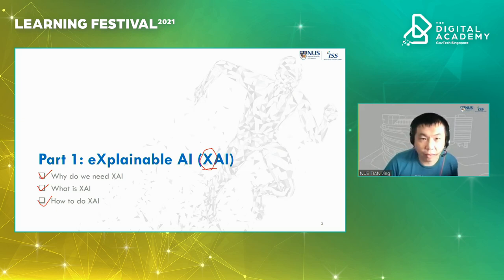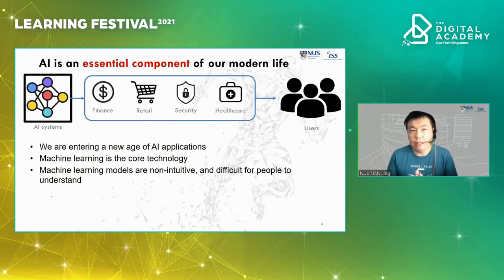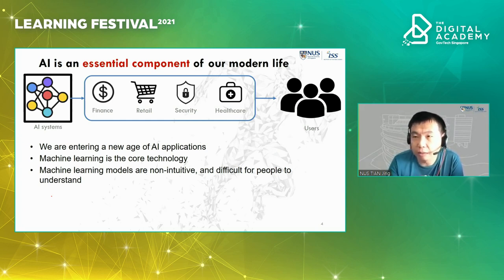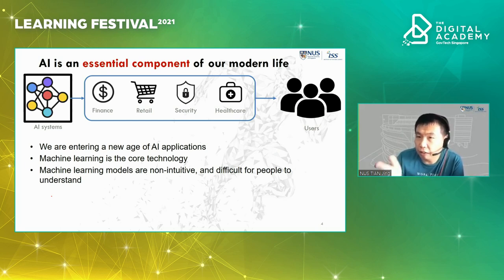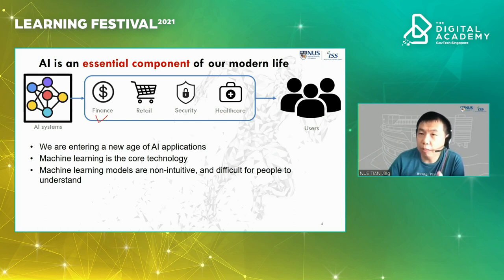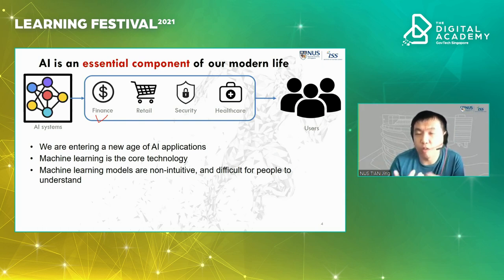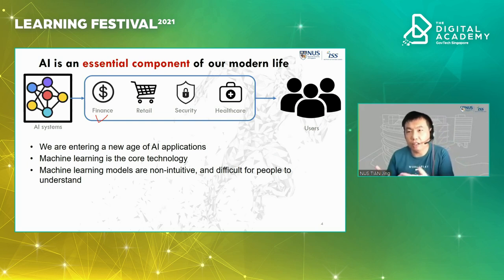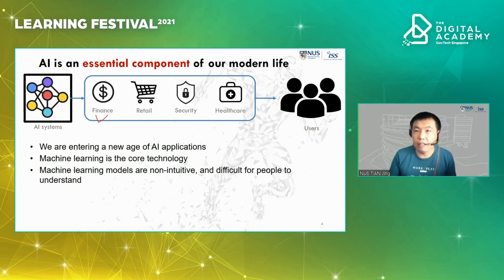Artificial intelligence is an essential component in our modern lives. We already see many successful AI applications across industry domains such as finance, retail, security, and healthcare. In the finance sector, we can deploy AI systems to provide intelligent investment recommendations — suggesting whether to purchase or sell certain stock products — and to monitor financial transactions such as credit card payments to differentiate reliable from suspicious activity.